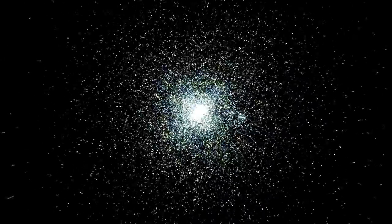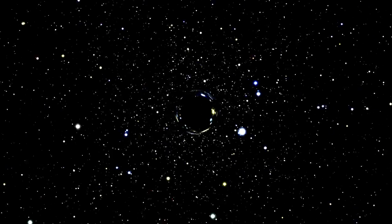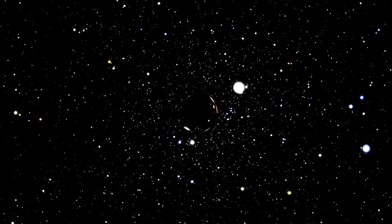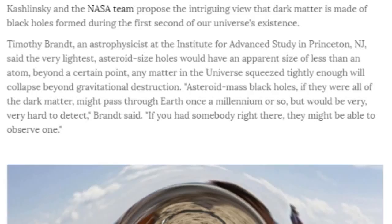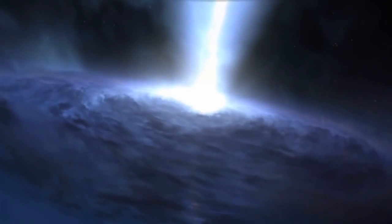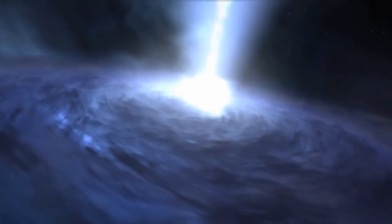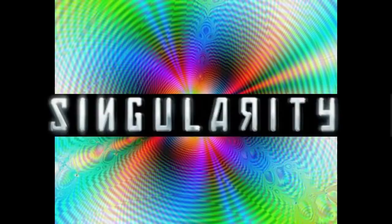Kashlinsky and the NASA team propose the intriguing view that dark matter is made of black holes formed during the first second of our universe's existence. Okay, this story has bored me. It's just like a total what if. Yeah, what if these tiny black holes made before the universe was in existence and now they're just flying by every thousand years?